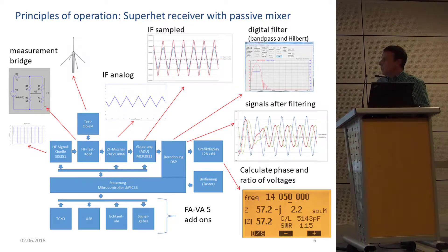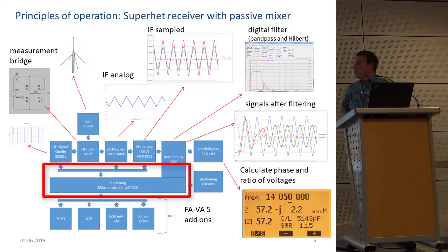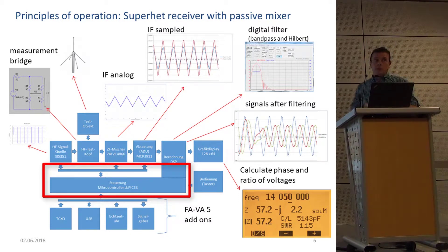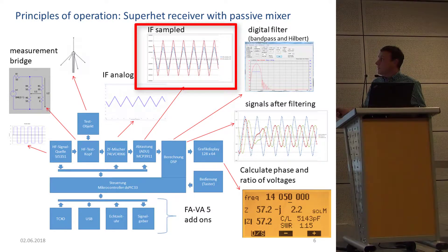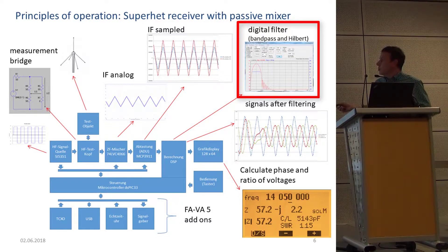What we then need to do is take the signal samples and move to digital signal processing. This was one of the key principles of the unit: move to DSP as fast as possible, because we cannot achieve such accuracy in the analog domain. You can get phase difference using OR gates, PLLs, and similar techniques, but forget about high accuracy — it will not work. We have to do this with digital signal processing. We take the two voltage samples, put them through a bandpass filter to select the necessary intermediate frequency, and simultaneously apply the Hilbert transform to mathematically arrive at phase difference and absolute value comparison.